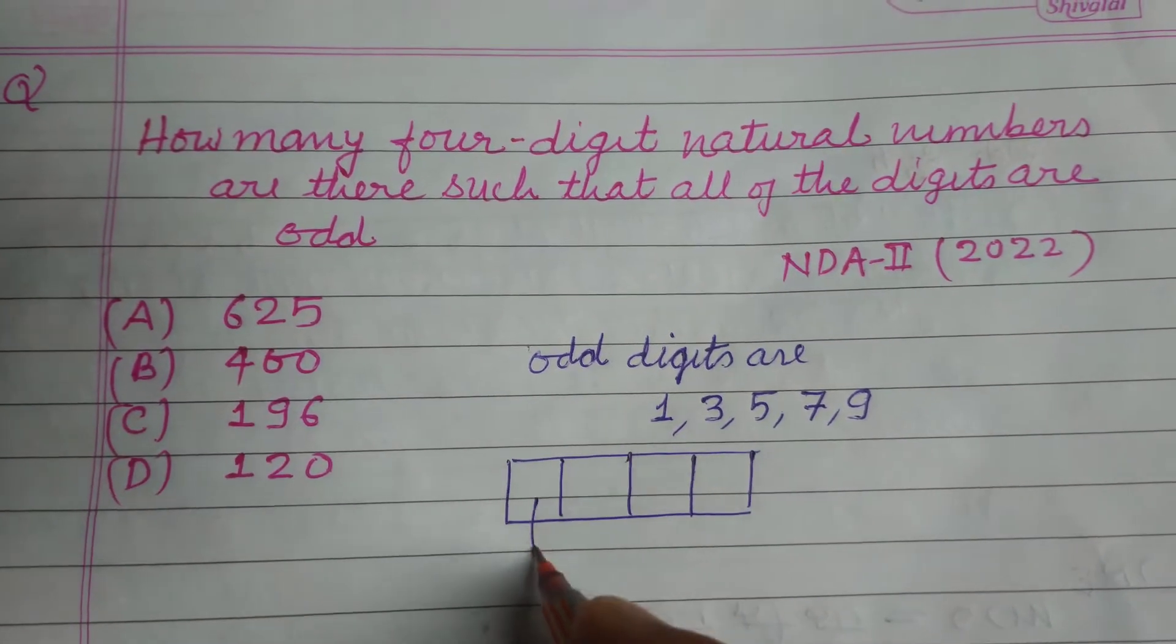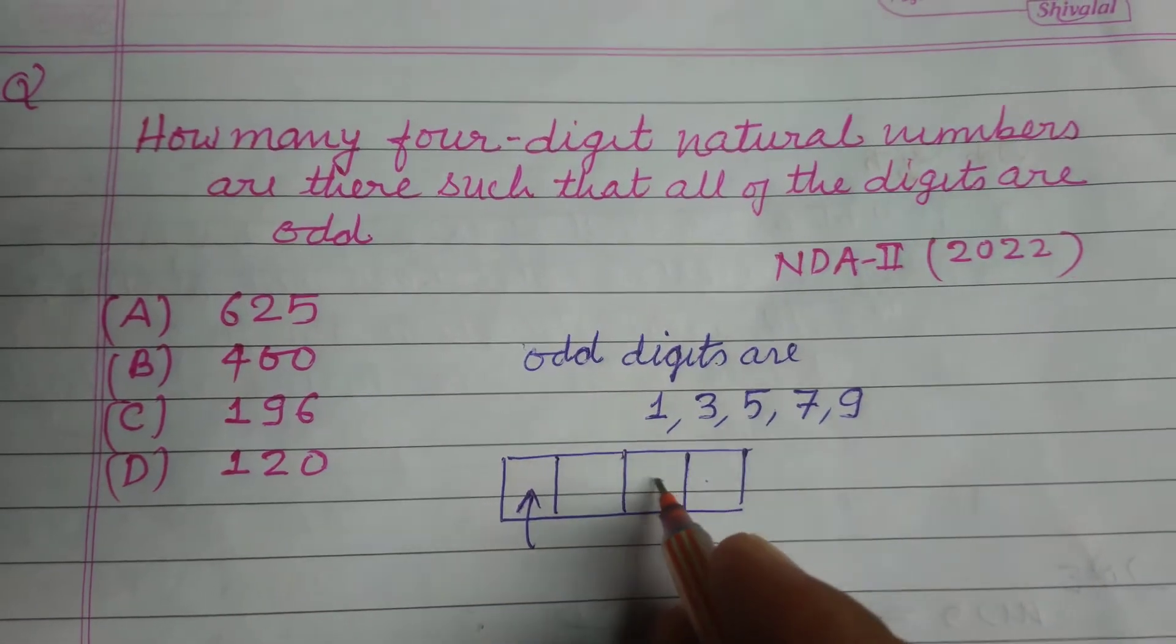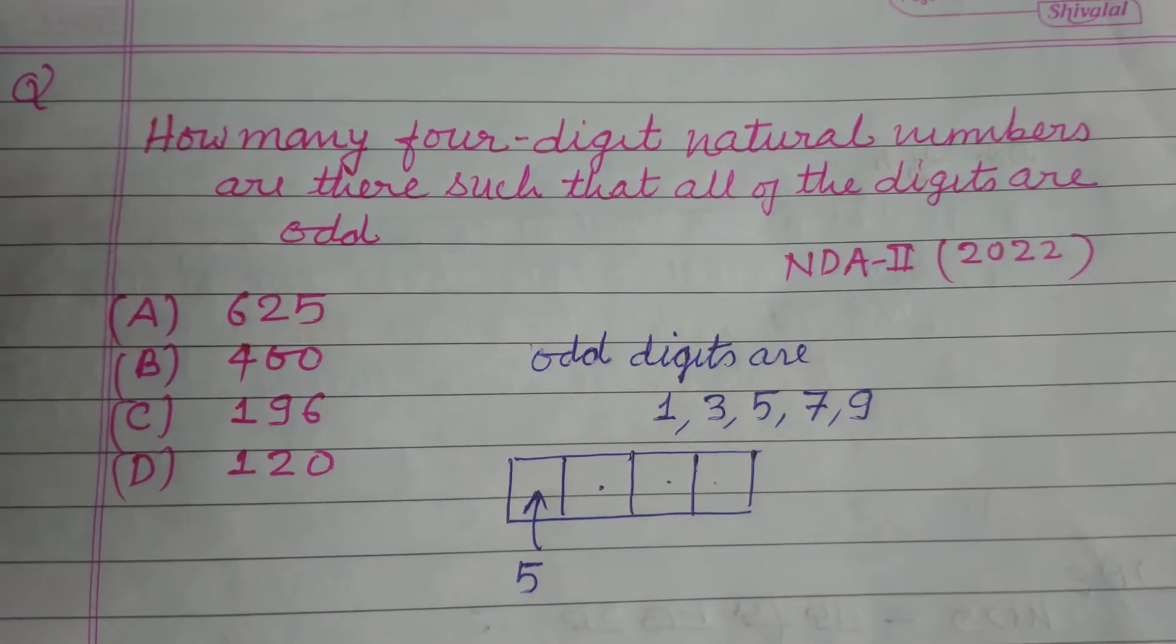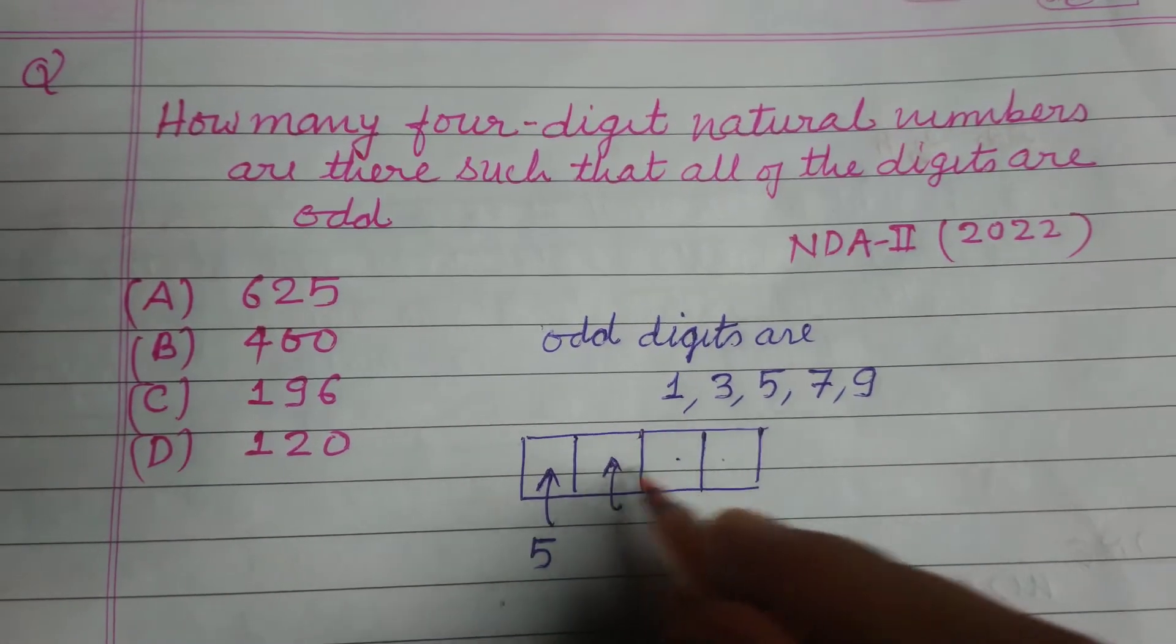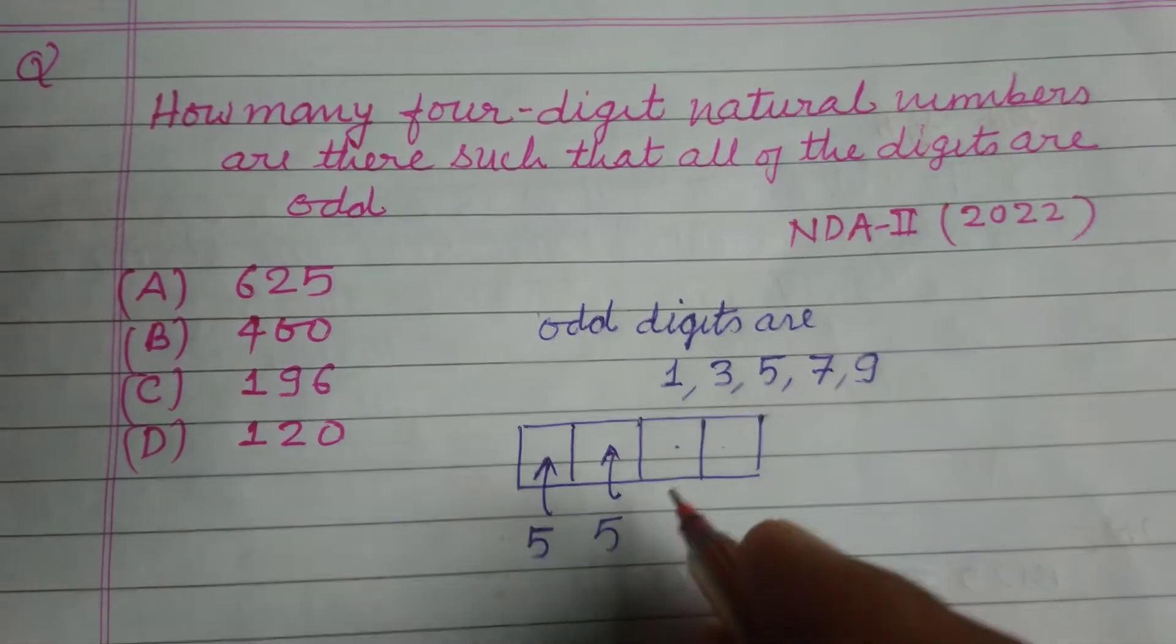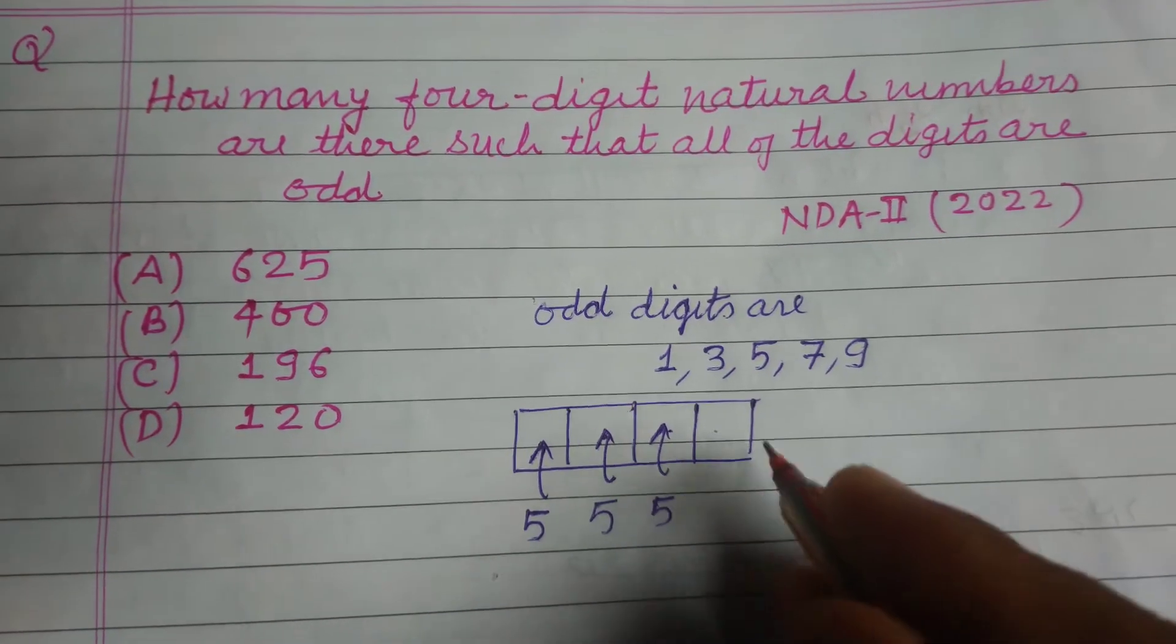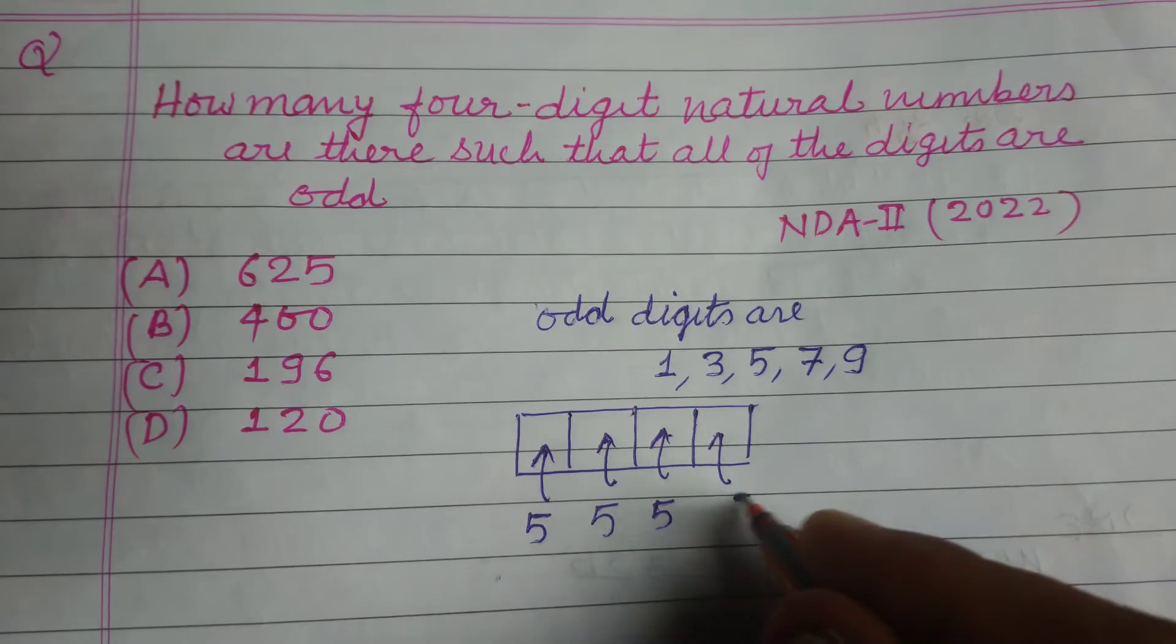So we can fill the thousand place by five ways, the hundred place by five ways, the ten place by five ways, and the one place by five ways.